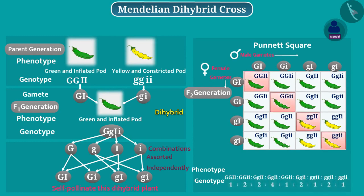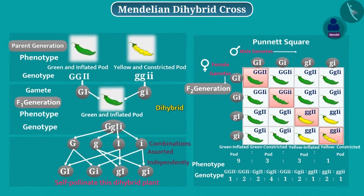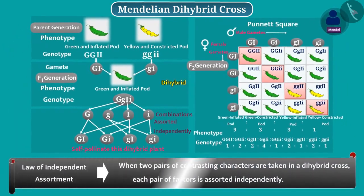Under the rule of dominance, the dominant character will be expressed. Therefore, in the F2 generation of a dihybrid cross, only 4 phenotypes will be obtained in the ratio of 9:3:3:1. Now you must have understood the law of independent assortment of inheritance. Today we have learnt about the Mendelian dihybrid cross.